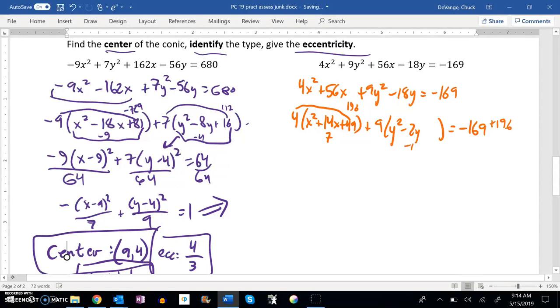Half of negative 2 is negative 1. Square of that is 1. So, that's really a 9. So, I'm also going to add a 9 over here.